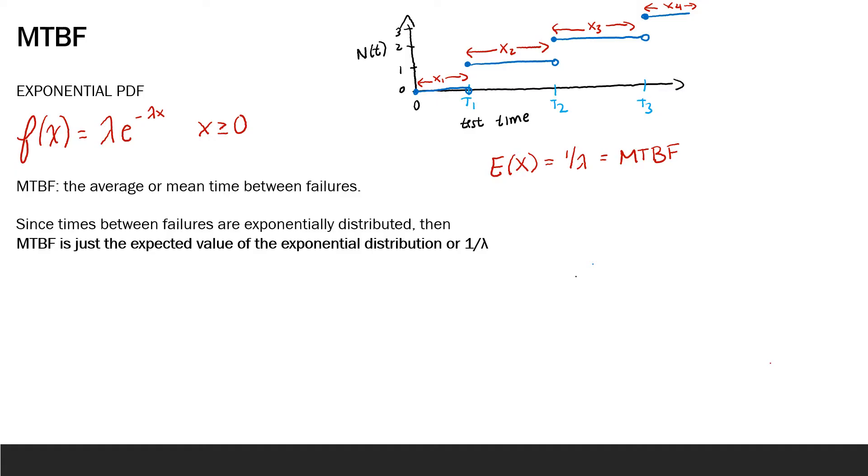So recall that in our last module, we learned about the exponential distribution with the PDF of the form lambda times e to the power of negative lambda times x, and this is where x is greater than or equal to zero.